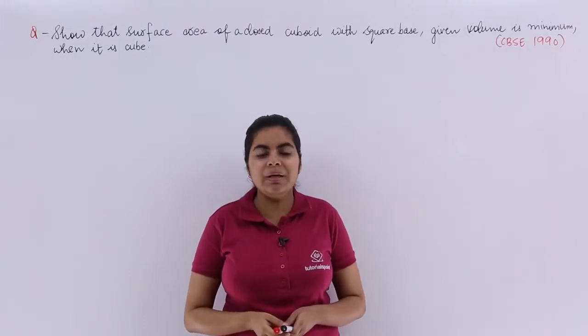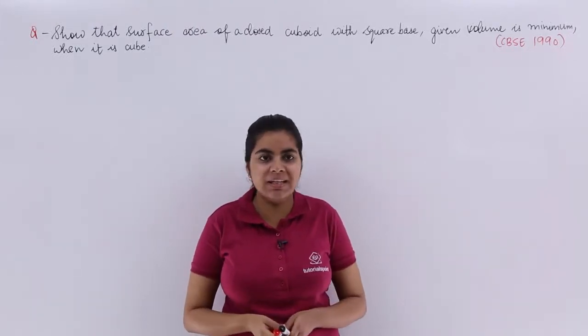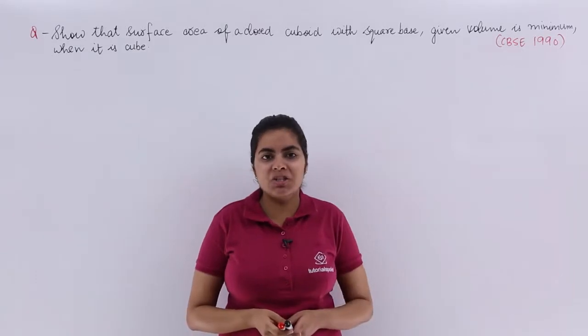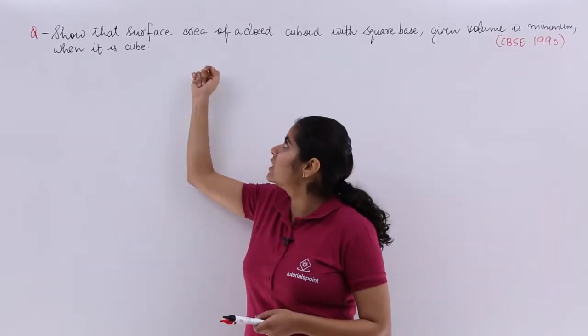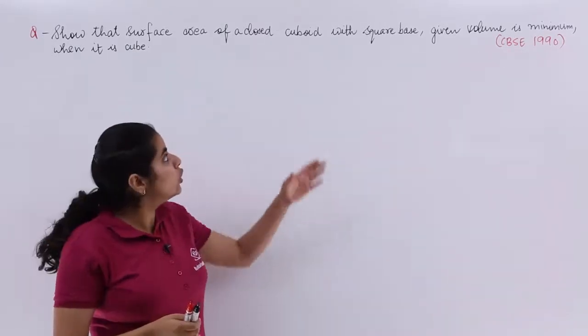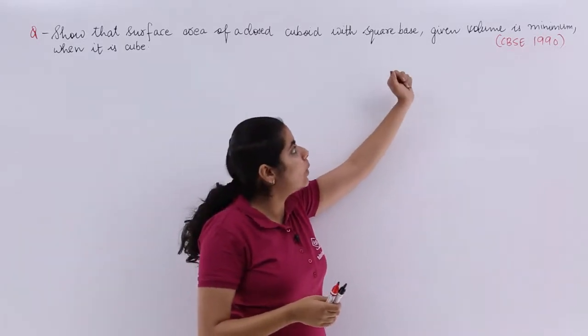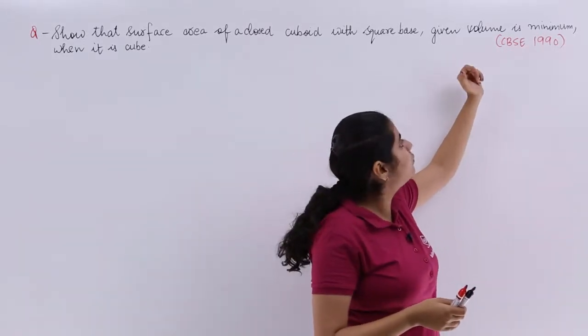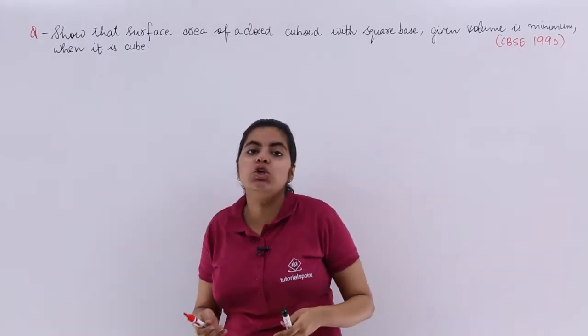Let's see another numerical problem in the series of problems that we are starting. A previous year board examination problem again says show that surface area of a closed cuboid with a square base given volume is minimum when it is a cube.